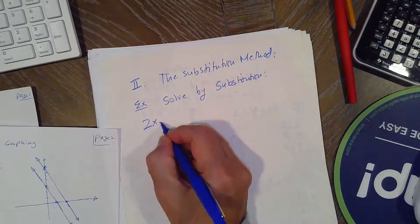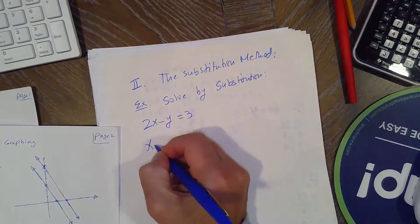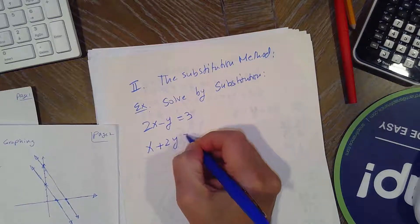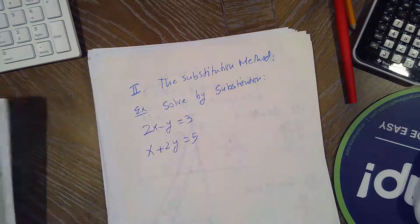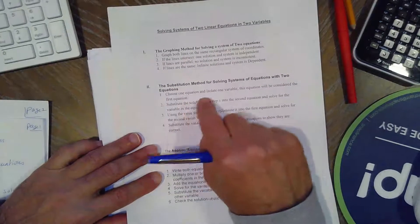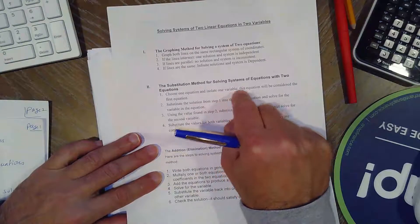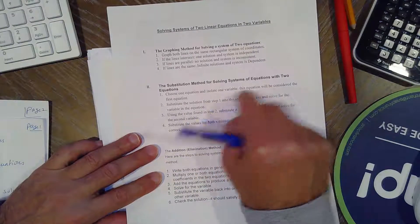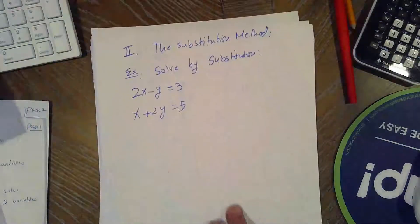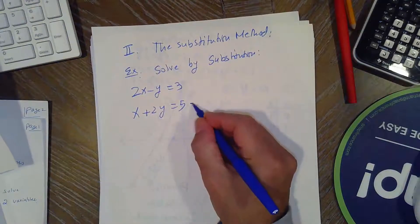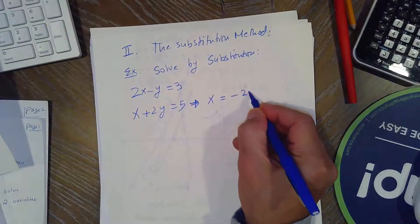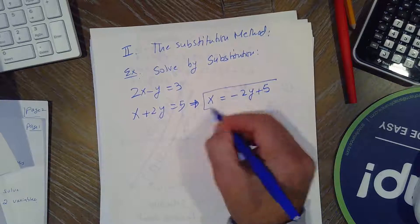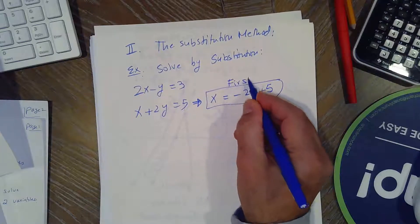Here's an example — solve by substitution: 2x minus y equals 3, and x plus 2y equals 5. The first step is to choose one equation and isolate one variable. I'm going to choose the second equation and isolate x, giving x equals negative 2y plus 5. This is what we call the first equation.